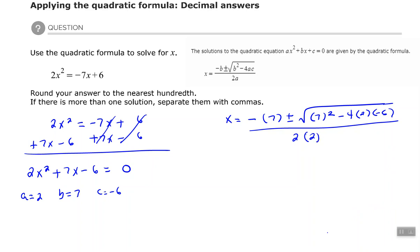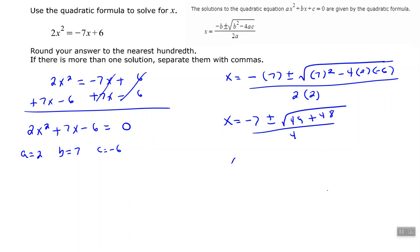Alright, so now let's start to simplify. We have -7 plus or minus the square root of 49—I have two negatives here so that makes a positive—plus 48. 4 times 2 times -6, all over 4. 49 plus 48 is 97.